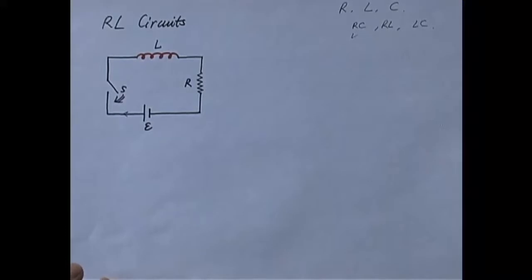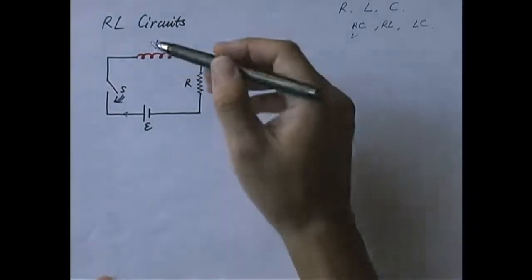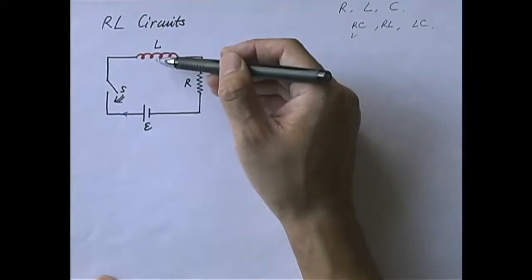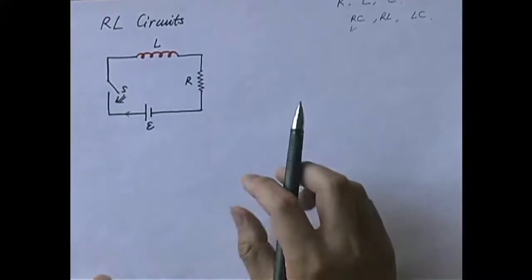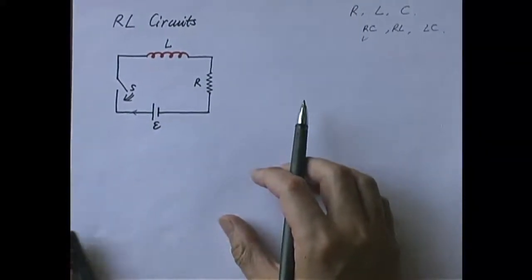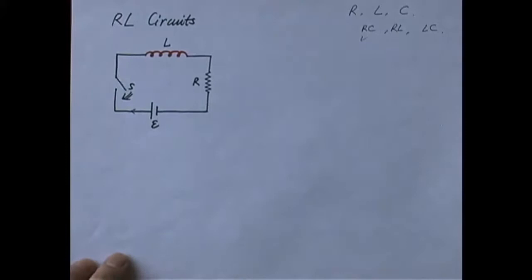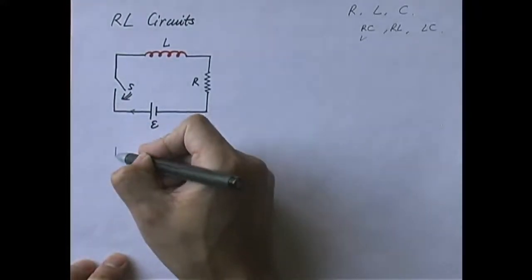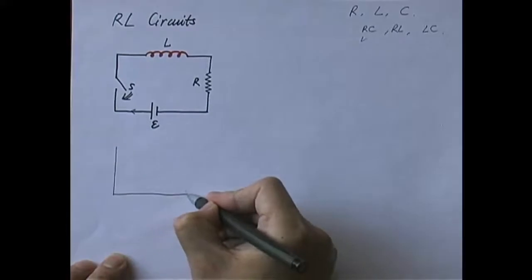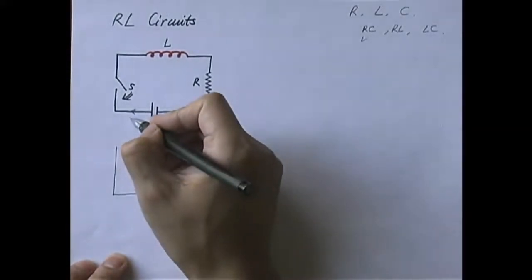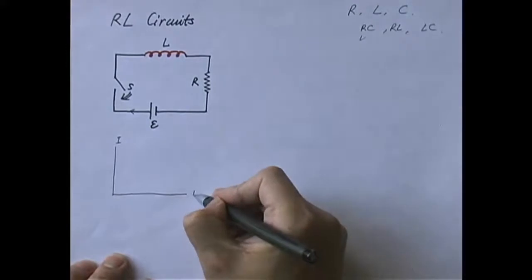So what I want to know is, how does the current change as a function of time? How does the current change as a function of time? Now, we studied RC circuits before. We know the current, there is a charging current, right? Which went up, actually went down.